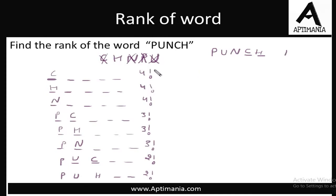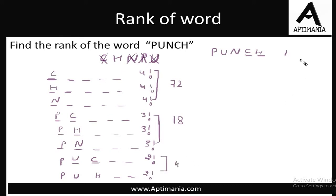In total we have: 4 factorial × 3 = 72, plus 3 factorial × 3 = 18, plus 2 factorial × 2 = 4, plus 1. So 72 + 18 + 4 + 1 = 95. The rank of the word Punch in the dictionary is 95.